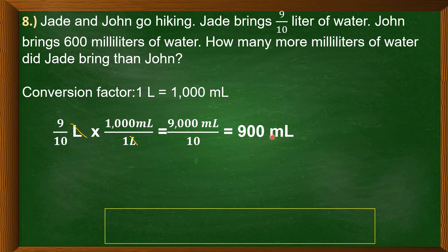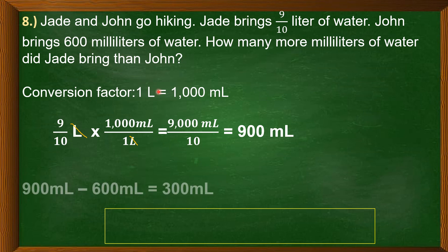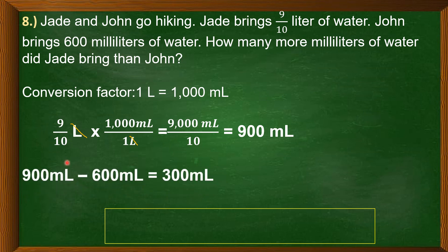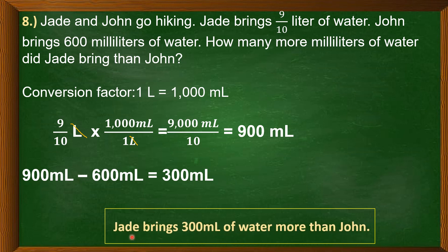Now subtract: Jade's 900 mL minus Jan's 600 mL equals 300 mL. Therefore, Jade brings 300 mL of water more than Jan.